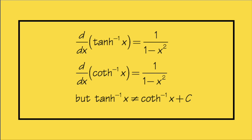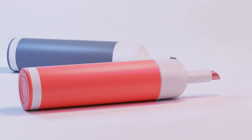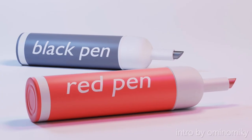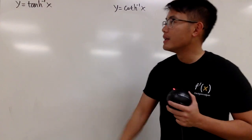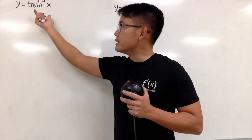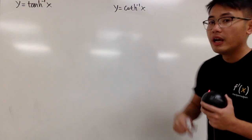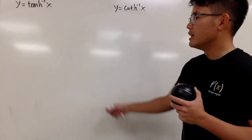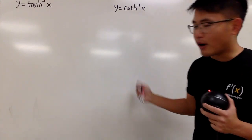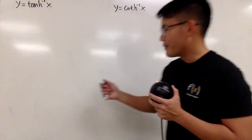In this video, I will show you that both the inverse hyperbolic tangent and inverse hyperbolic cotangent have the same looking derivative, namely 1 over 1 minus x squared, but you are going to see that they are not off by a constant. So we are going to first write expressions for inverse hyperbolic tangent in terms of natural log, and then do the same for the other, and then differentiate the natural log versions of these two functions.